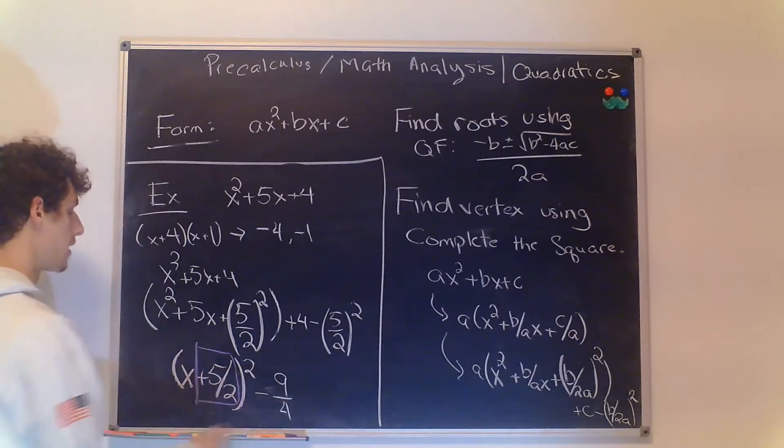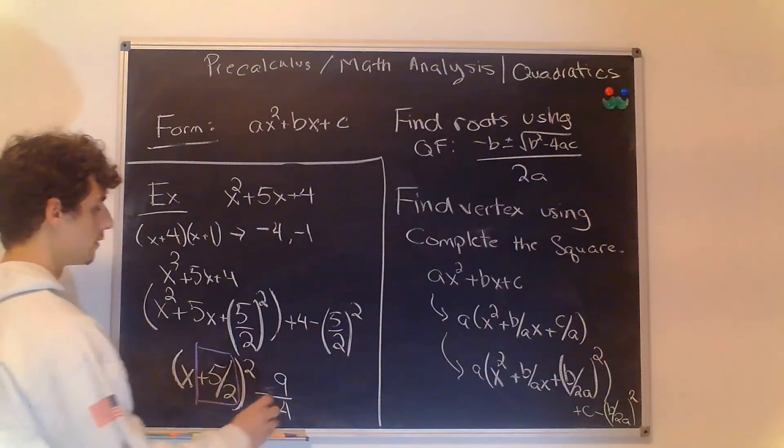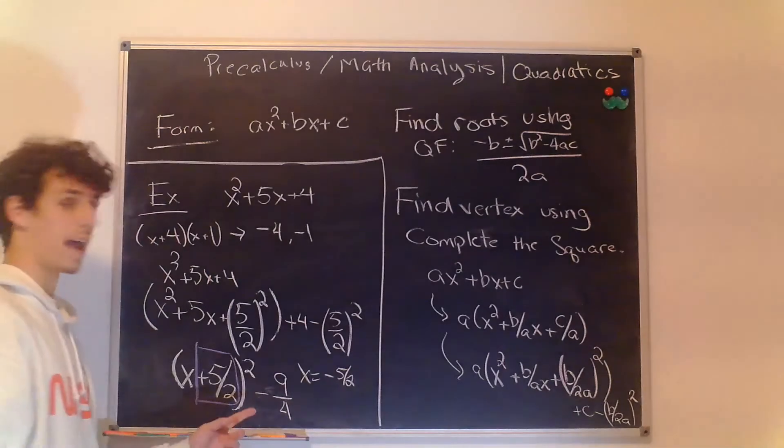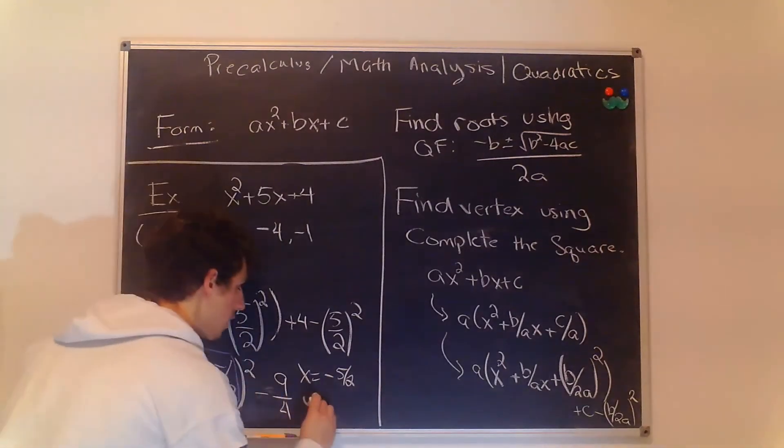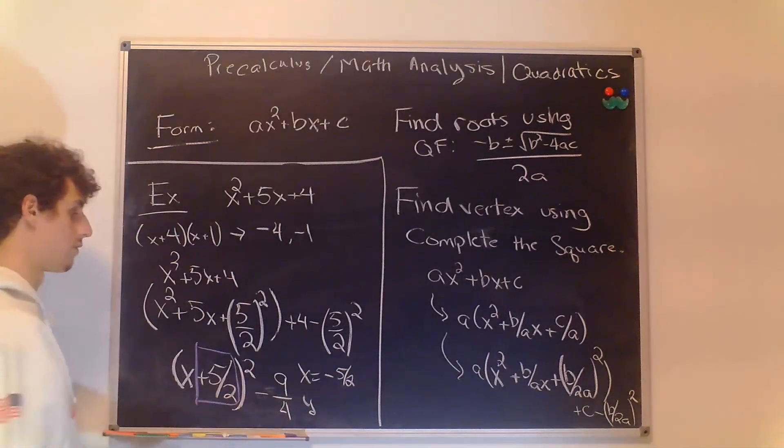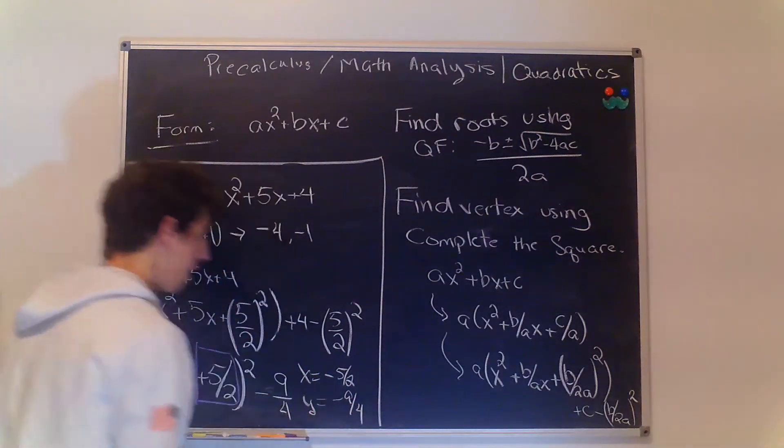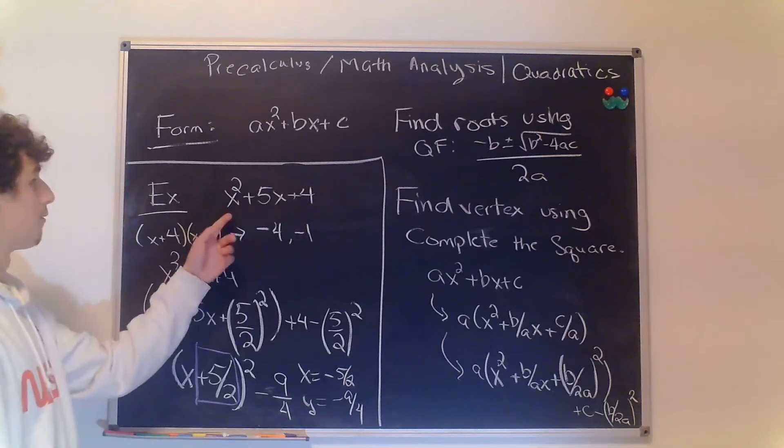So in this case our vertex is x = -5/2 and our y point is whatever is left outside of this square so in this case it's -9/4 and that's our vertex point for the parabola of this quadratic.